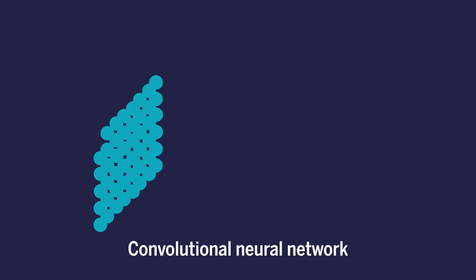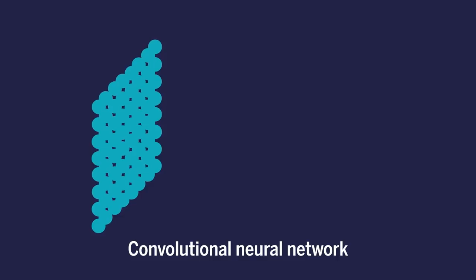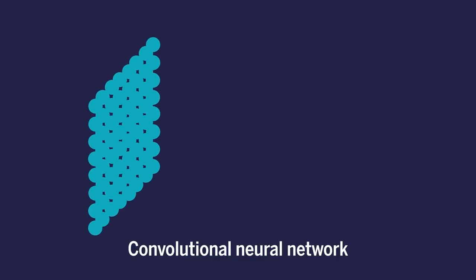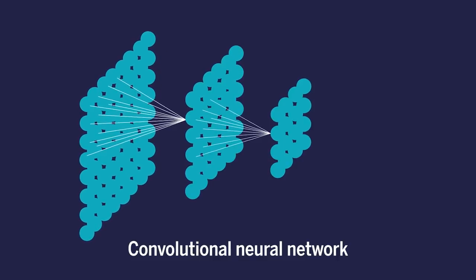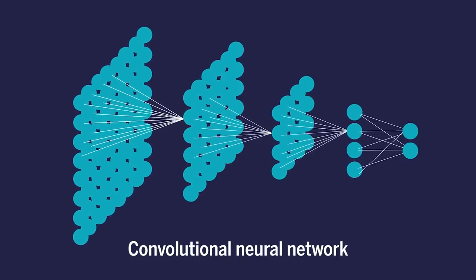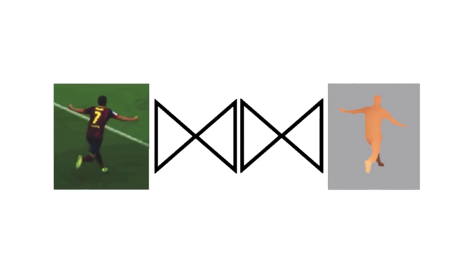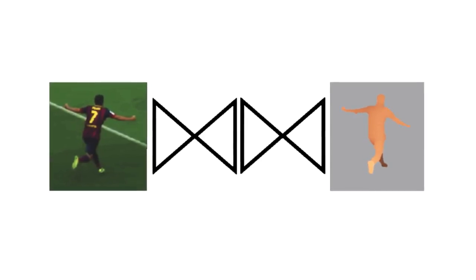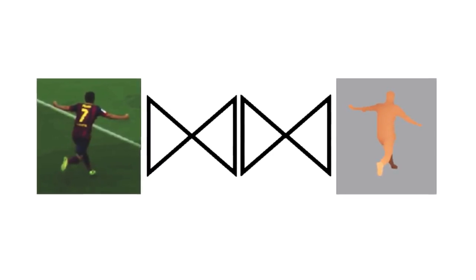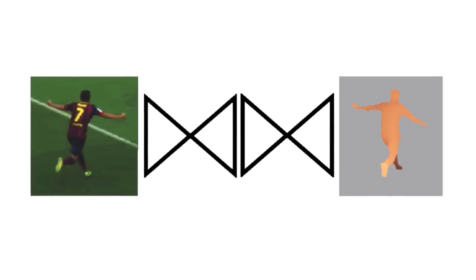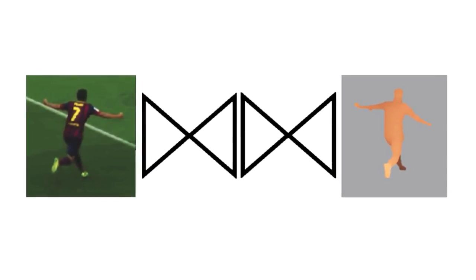The key to the approach is a convolutional neural network, a type of artificial intelligence algorithm loosely modeled on the part of the brain that processes visual data, that researchers trained to estimate how far the surfaces of each player are from the camera that recorded the match.